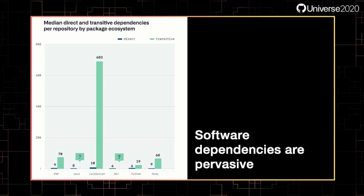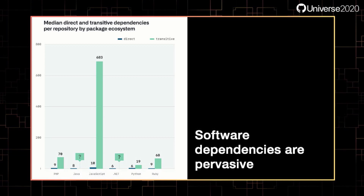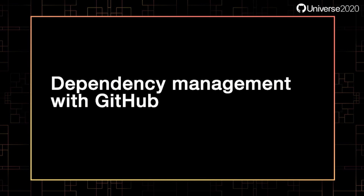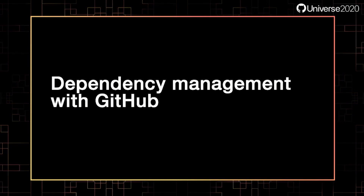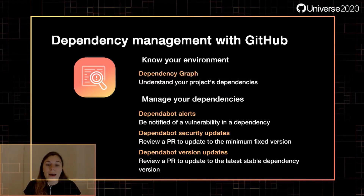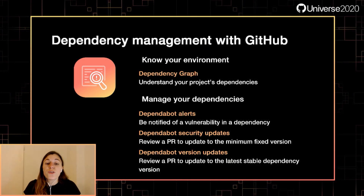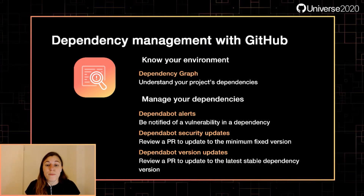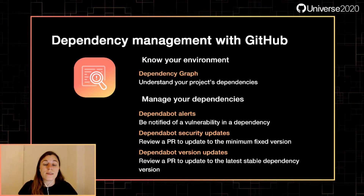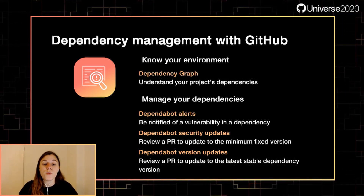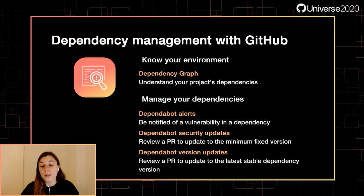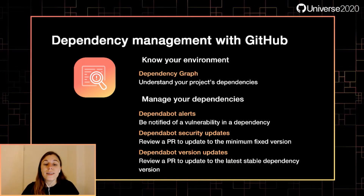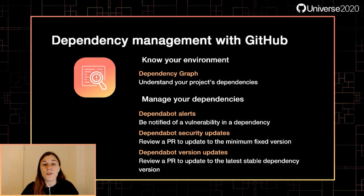So what can you do on GitHub today? If you're using GitHub, there are several features you can take advantage of to improve the security of your dependencies. First, you need to know your environment — understand what dependencies you use. Then manage your dependencies, meaning know about vulnerabilities in those dependencies and be quick to discover and react to them. On GitHub, to know your environment, use Dependency Graph.